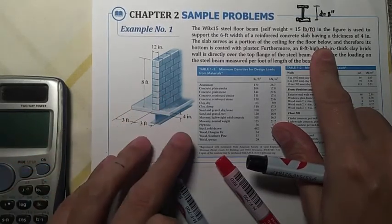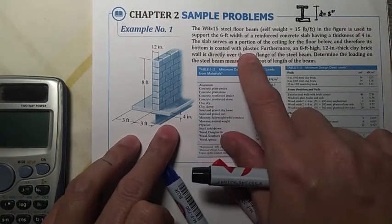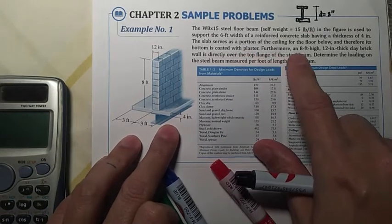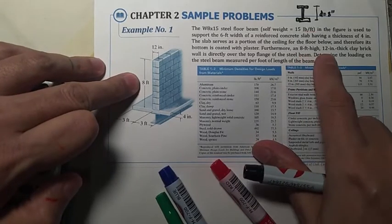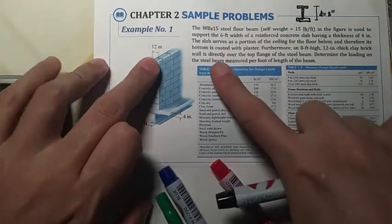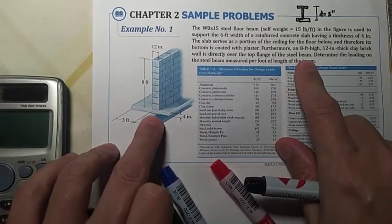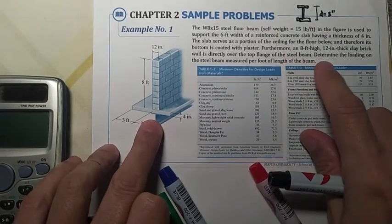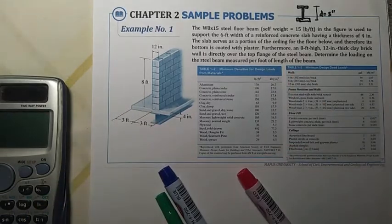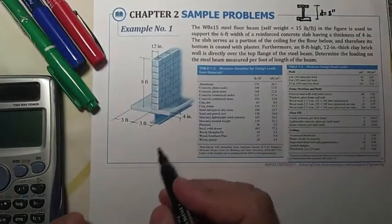Then the slab serves as a portion of the ceiling for the floor below, and therefore its bottom is coated with plaster. Furthermore, an 8 feet high, 12 inch thick clay brick wall is directly over the top flange of the steel beam. Determine the loading on the steel beam measured per foot of length.